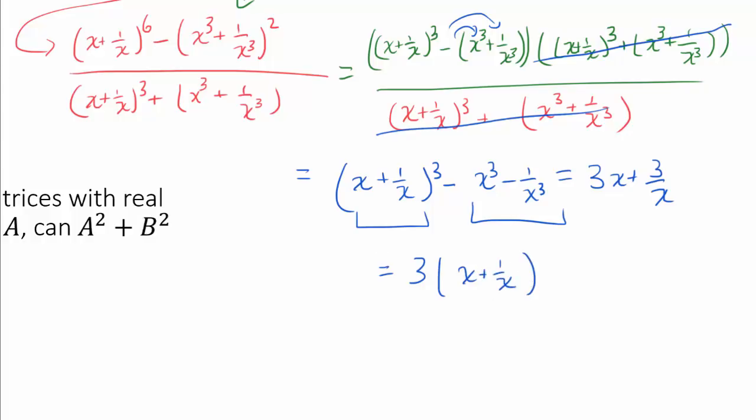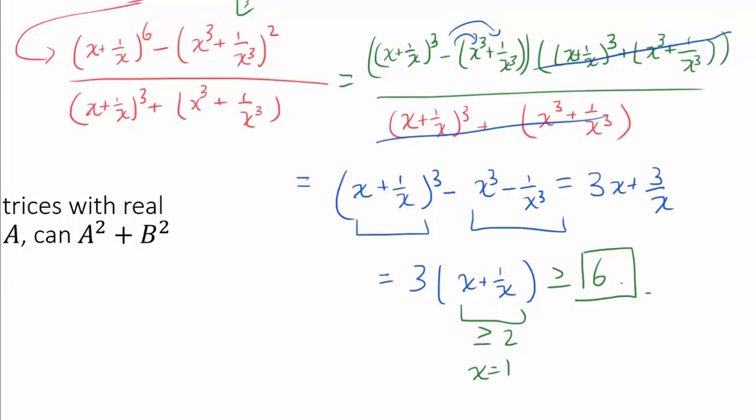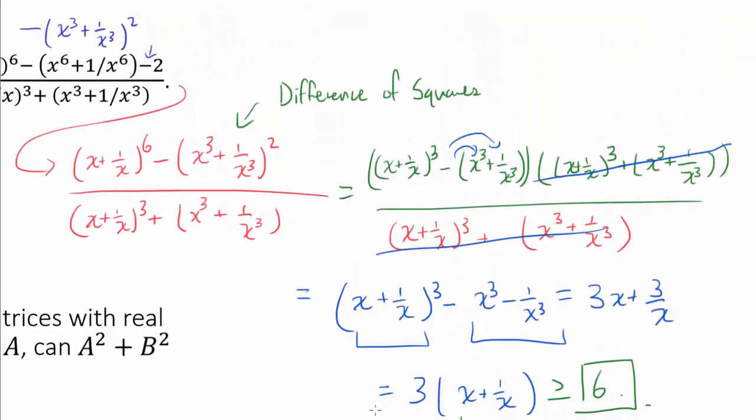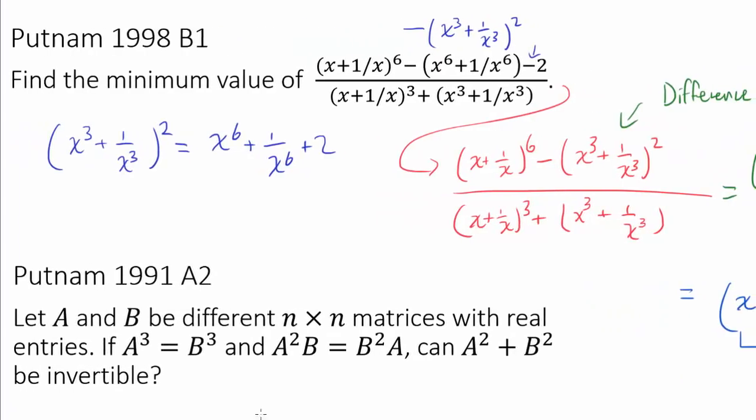And it is a famous result that x plus 1 over x has a minimum of 2 when x is equal to 1. So this entire thing is greater than or equal to 6. And the minimum is obtained when x is 1. So we know the answer to the first one is 6. Let's get on to the next one.